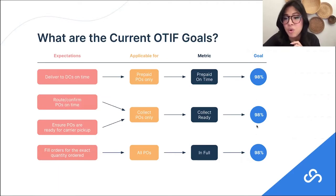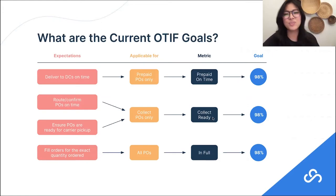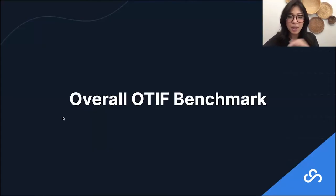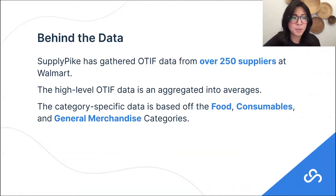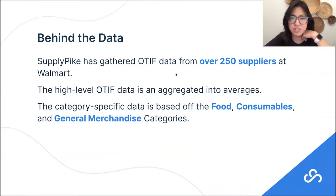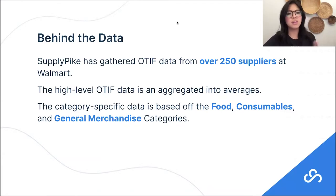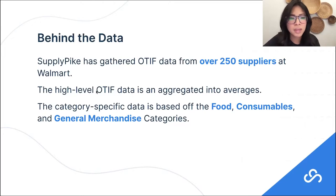The goal across all of these different metrics is at 98%. Now that we've established what in-full means, what collect-ready means, and what prepaid on-time means, we can talk about the actual data we're seeing across our suppliers. SupplyPike has gathered OTIF data from across 250 different suppliers at Walmart, and these 250 suppliers are across 40 different product categories, so we have pretty good data that is representative of what we're seeing across the board. High-level OTIF data is aggregated and summed across all 250 suppliers and averaged out.